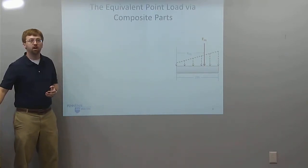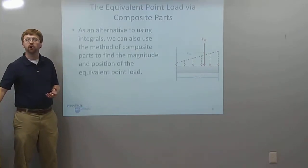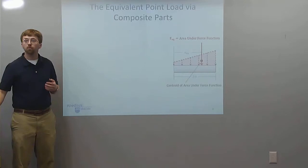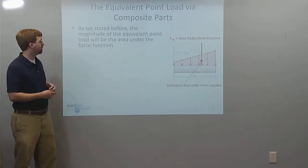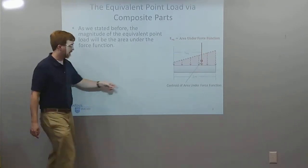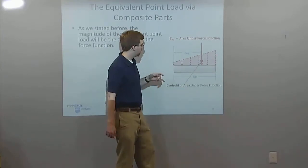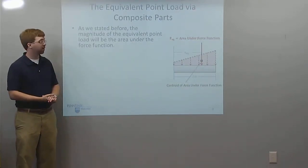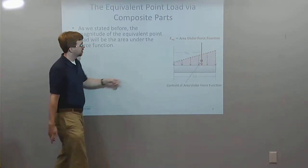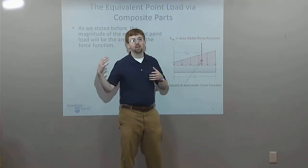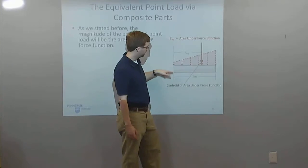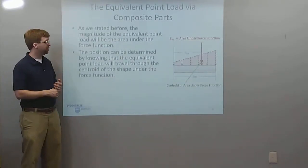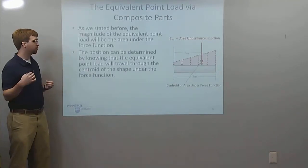To calculate this via composite parts, I'll use a more geometry-based solution rather than calculus-based. The magnitude of the equivalent point load will be equal to the area under the force function, which in this case is shown in pale red and is just a trapezoid. If I can find the area of this trapezoid, I can find the equivalent point load. The units work out because newtons per meter times meters gives just newtons.